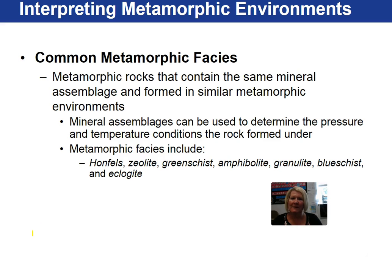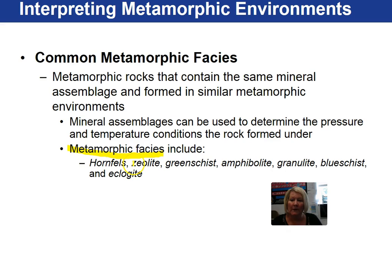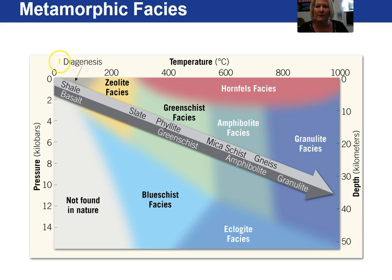Metamorphic rocks with the same mineral assemblages indicate they formed in a similar metamorphic environment. We call these metamorphic facies. They include hornfels, zeolite, green schist facies, amphibolite, granulite, blue schist, and eclogite. These facies tell us specifically about what type of environment the metamorphism occurred in. A pressure-temperature-depth diagram shows the placement of all the different facies.